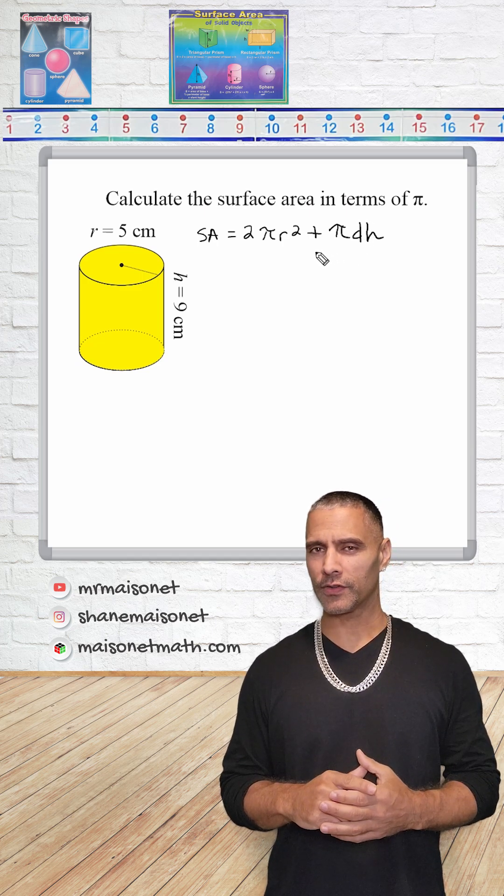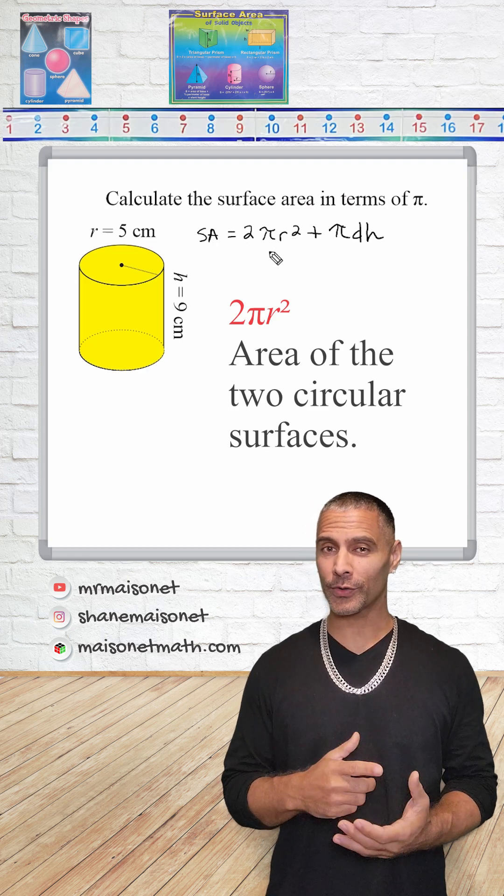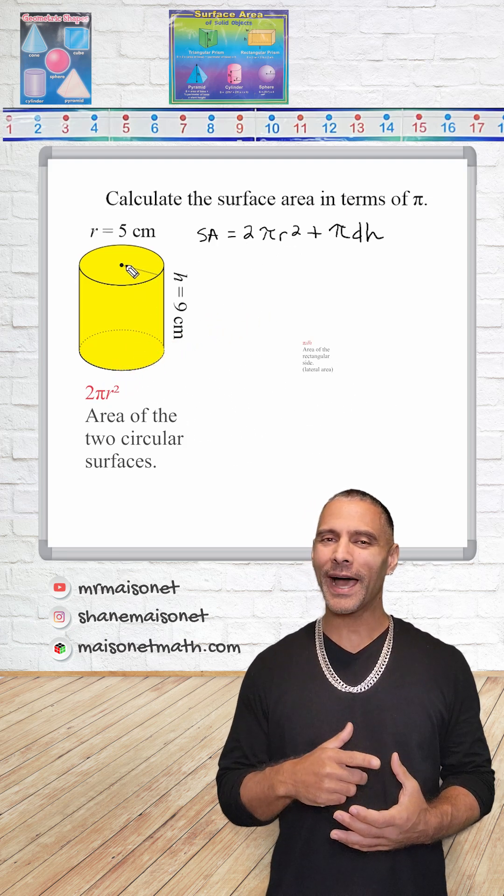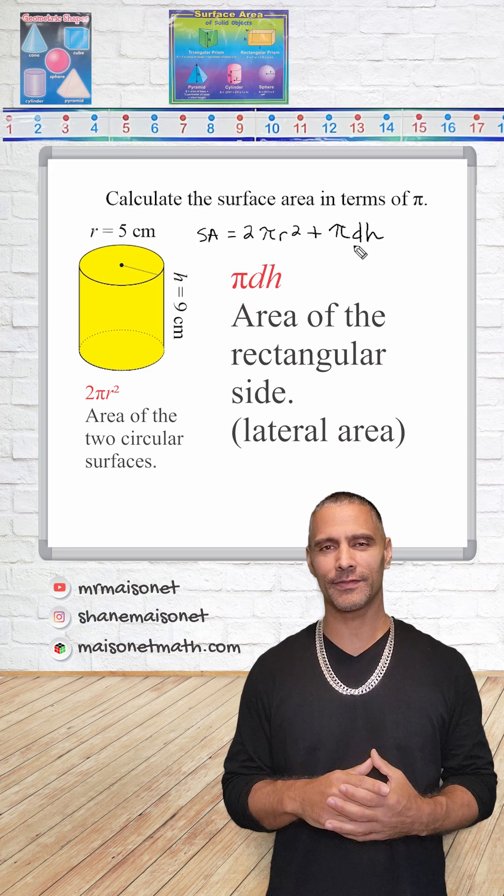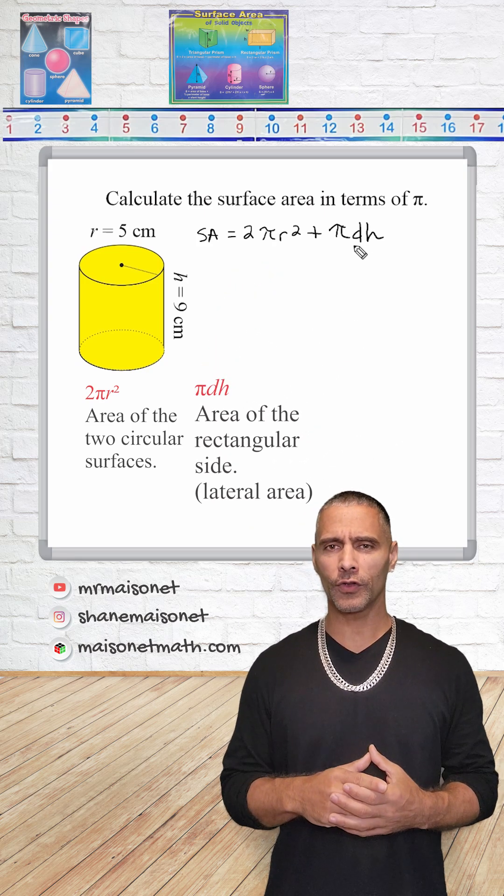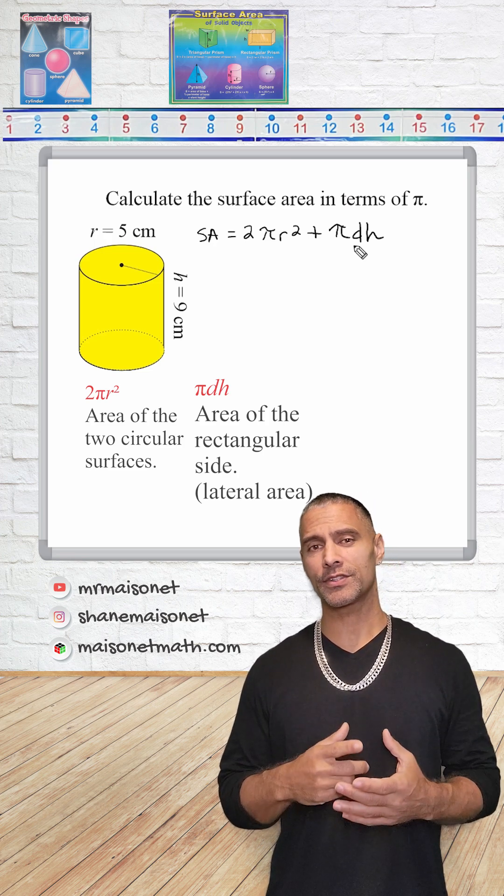So this formula has two main parts. 2πr² calculates the total area of the two congruent circular bases of the cylinder, and πdh calculates the area of the rectangle that wraps around the sides of the cylinder. This part is also referred to as the lateral area, which is the area of the cylinder side.